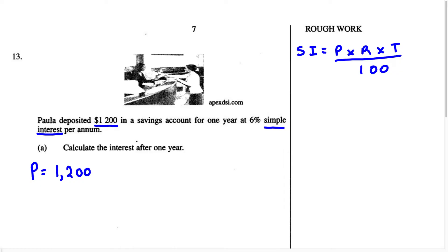The principal is always going to be the money that's either borrowed or deposited — it's always the starting amount. Next, we have the rate, which is always written as a percentage. The question says: for one year at 6% simple interest per annum. So the rate is 6%. We write R equals 6%.